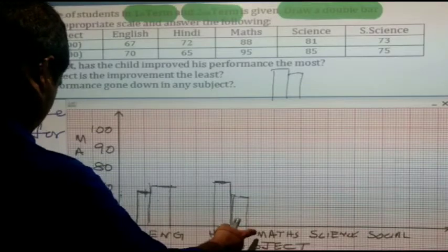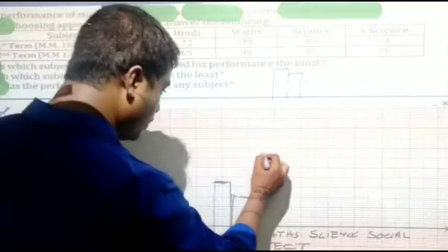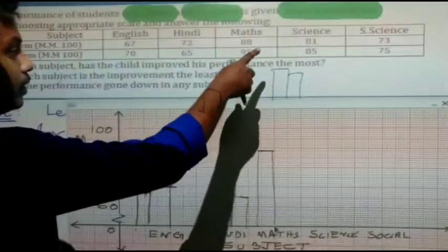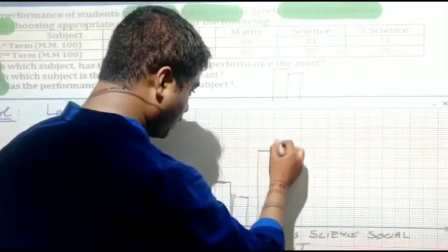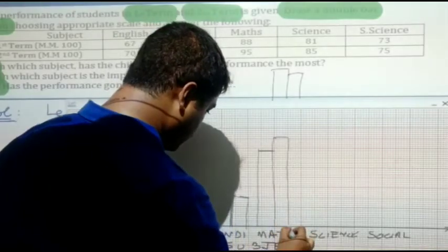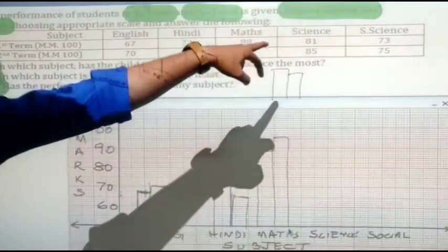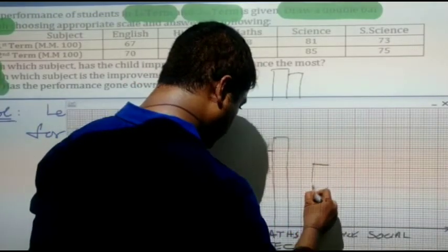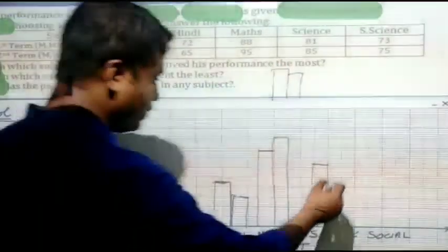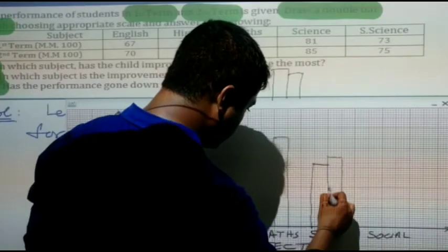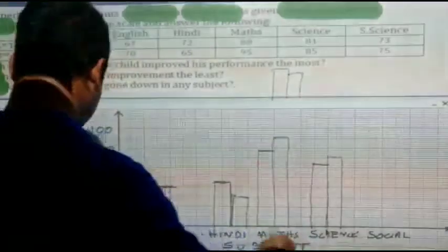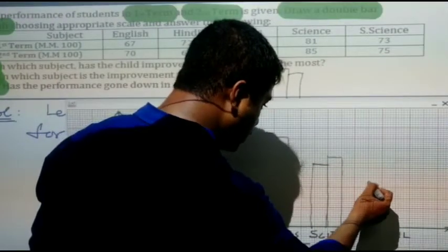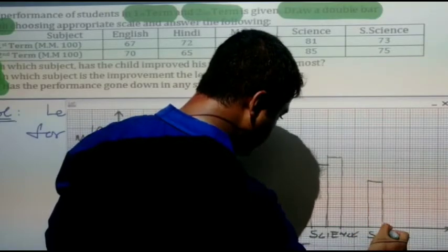For Maths, the values are 88 and 95. Starting from 80: 85, 86, 87, 88 — so 88 is marked here. For Science, the values are 81 and 85. Then for Social Science, we have 73 and 75 — counting 70, 71, 72, 73 gives us 73, and 75 is a bit higher.